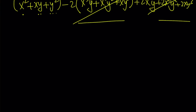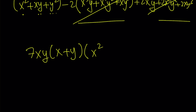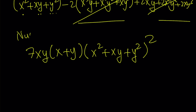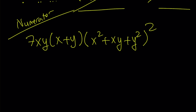I'm done with the numerator. Let me go ahead and put it all together and give you what the numerator looks like. It's going to be 7xy times x plus y — remember, we had that — and the other factor is x squared plus xy plus y squared, all squared. That is my numerator.